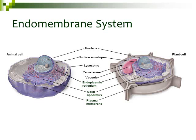This section looked at the endomembrane system in eukaryotic cells. We looked at the nucleus, which contains chromatin — that DNA — and then the different parts of the endomembrane system: the endoplasmic reticulum, the Golgi apparatus, the lysosomes, peroxisomes, and vacuoles. Finally, we looked at the plasma membrane.